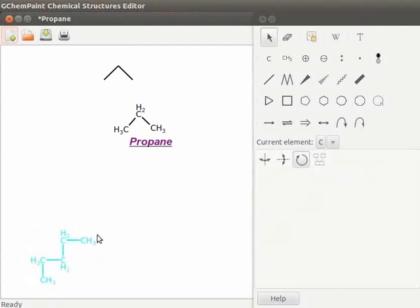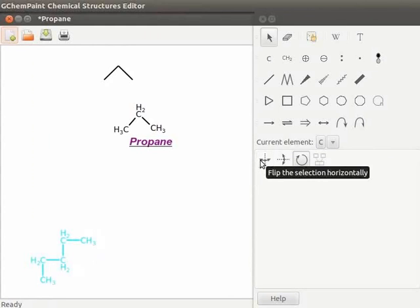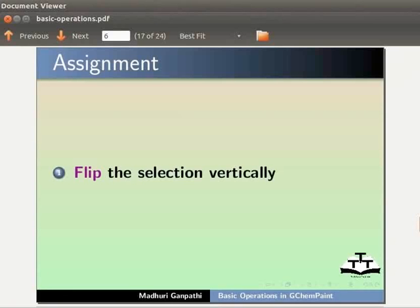Now let us learn to flip the object. Let us flip pentane structure horizontally. Click on flip the selection horizontally tool to flip the structure horizontally. Pause the tutorial here and flip the selection vertically on your own.